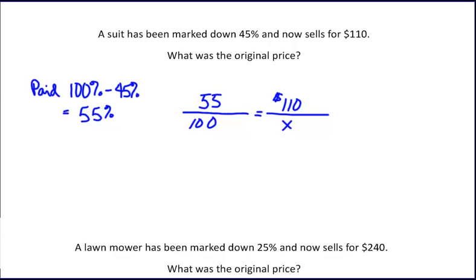To solve the proportion, we will take the upper left, which is 55, times the lower right, which is x. Setting that equal to the lower left, which is 100, times the upper right, which is 110.